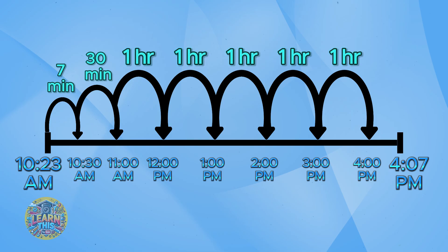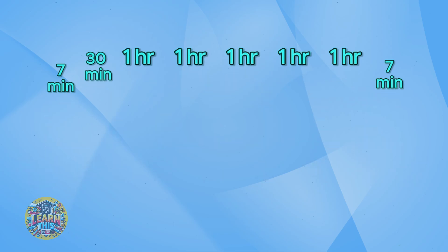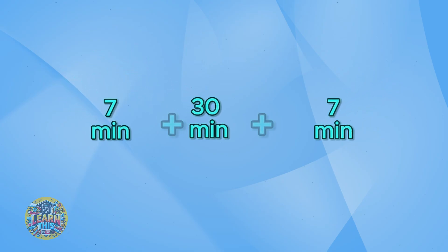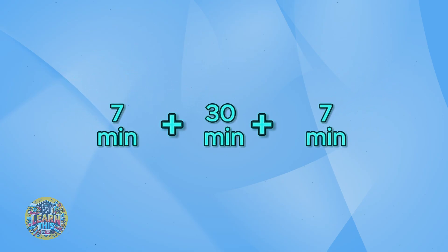Because the end time is 4:07, we know that there are seven more minutes after 4 o'clock before the plane arrives. So we can add seven minutes here. Now just add up the hours and minutes. Let's start with the minutes: 7 plus 30 plus 7. What do you get when you add those up? We have 44 minutes.